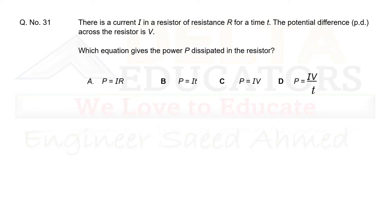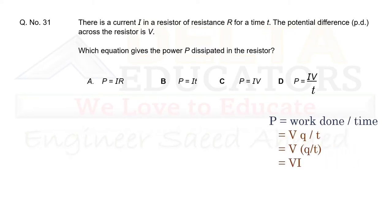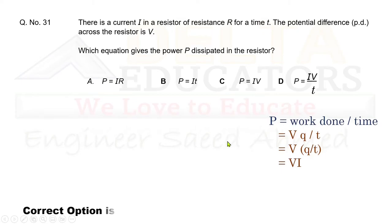Question 31: A resistor of resistance R carries current I for time T, with potential difference V. Which equation gives the power P dissipated? Power = work done ÷ time. Work done = V × Q, so P = VQ/T. Since Q/T = I, power P = VI. VI is given in option C. Correct option is C.